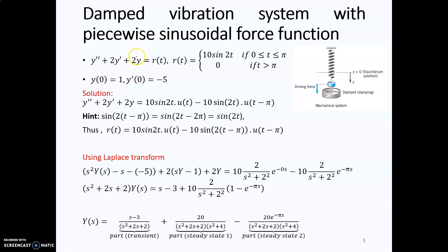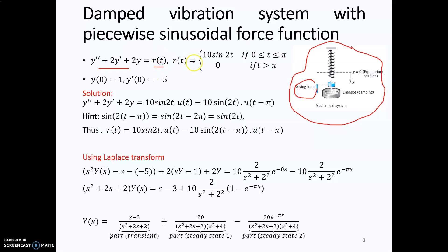This is the first example, where this ODE represents a damped vibration system. The force acting on the system is R(t), which is a piecewise function: 10 sin(2t) from 0 to pi, and when t is greater than pi it is zero. The initial conditions are y(0) equal to 1, and y'(0) equal to negative 5.